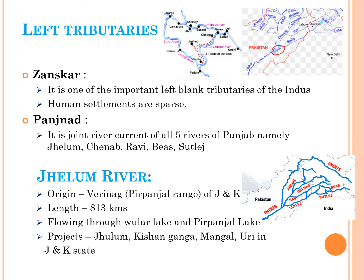Jhelam river originated from Verinag, which is in the Pirpanjal range of Jammu and Kashmir, and is about 813 kilometers in length. The Jhelam river flows through Wular lake and Pirpanjal lake. The important projects on the Jhelam river are Julum, Kishan Ganga, Mangal and Uri, all in Jammu and Kashmir state.